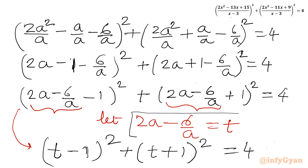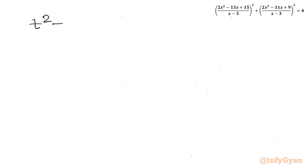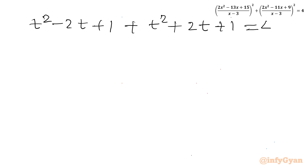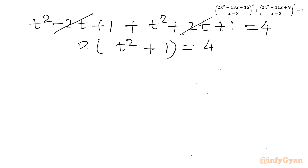Remember this is our substitution; we will use it a little later. First, let us solve this. Applying the (a ± b)² formula: t² - 2t + 1 + t² + 2t + 1 = 4. The -2t and +2t cancel, giving 2t² + 2 = 4, so t² = 1. Taking square roots on both sides, t = ±1.